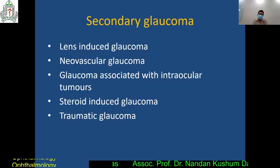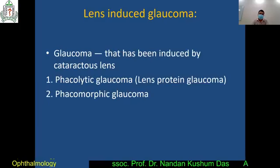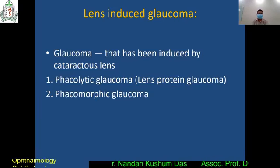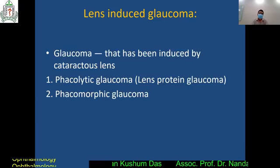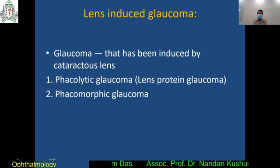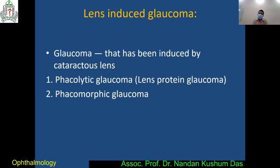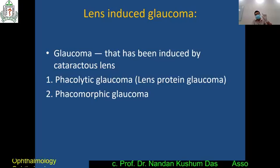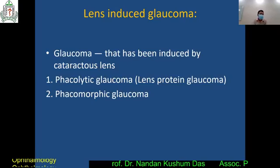Among these, three are most important: lens-induced glaucoma, neovascular glaucoma, and steroid-induced glaucoma. The important lens-induced glaucomas are phacolytic glaucoma and phacomorphic glaucoma. These two are the important glaucomas. Maximum examiners ask: what are the important lens-induced glaucomas? Answer: phacolytic and phacomorphic glaucoma. Both are caused by a cataractous lens.